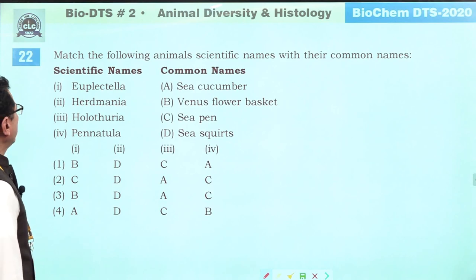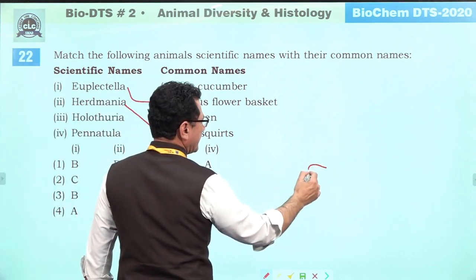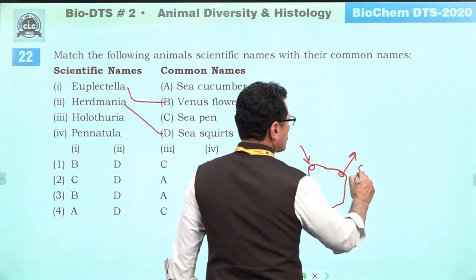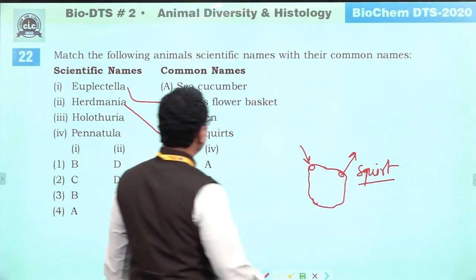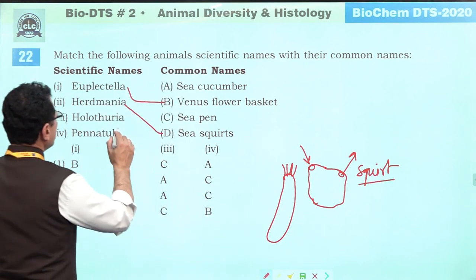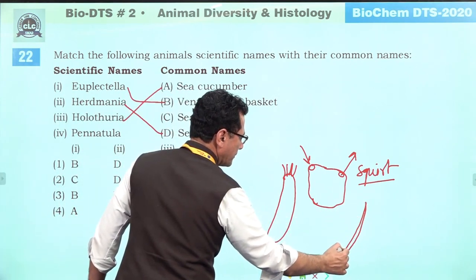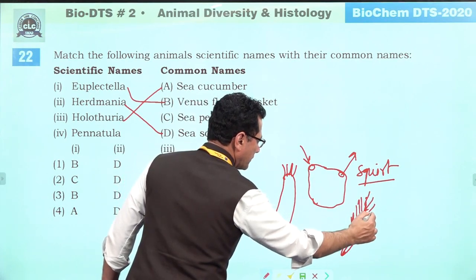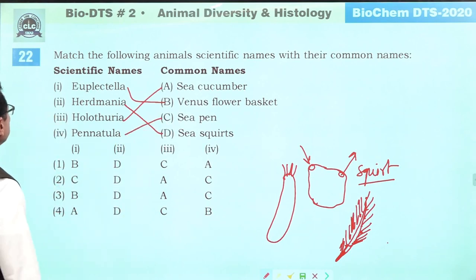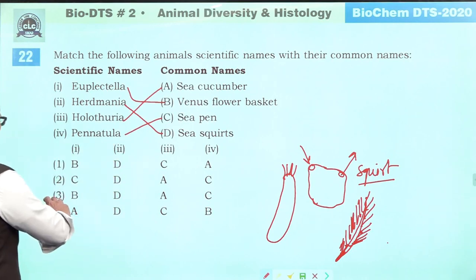Match the following: Euplectella — Venus flower basket. Herdmania — sea squirt (it has two openings, water enters from one and is expelled from another, like a squid). Holothuria — sea cucumber (shaped like a cucumber). Pennatula — sea pen (looks like a pen/feather). So matching: first = B, second = D, third = A, fourth = C. Third is the correct answer.